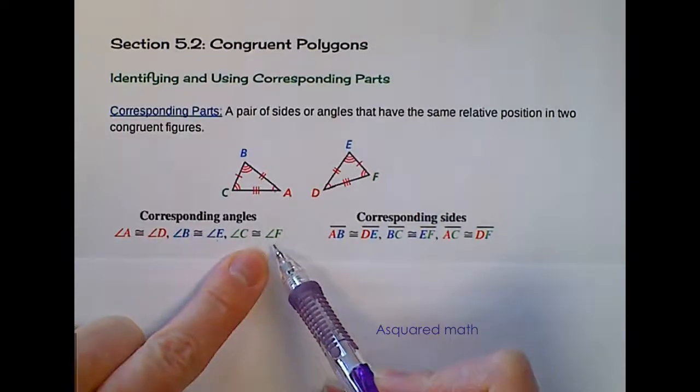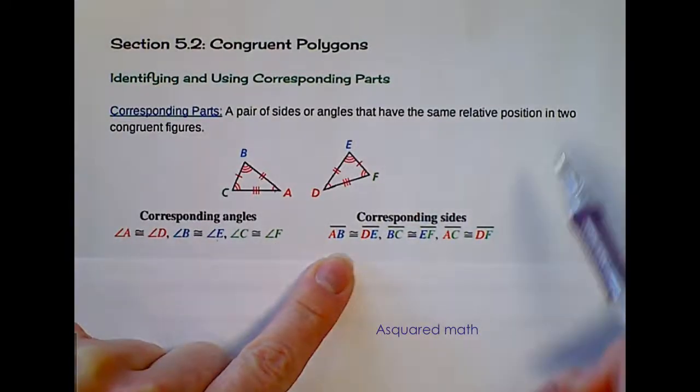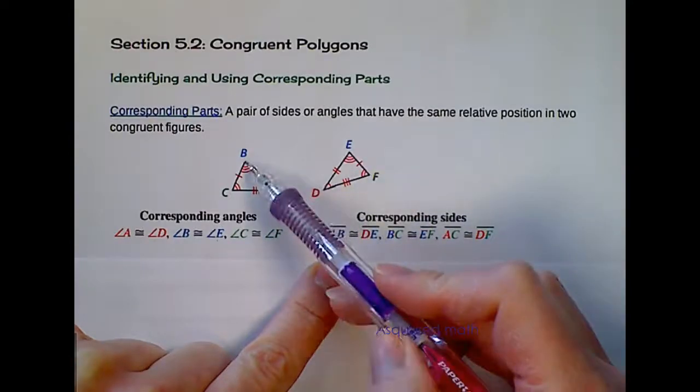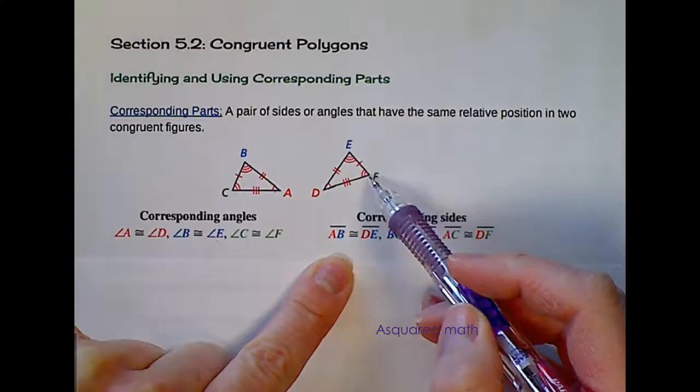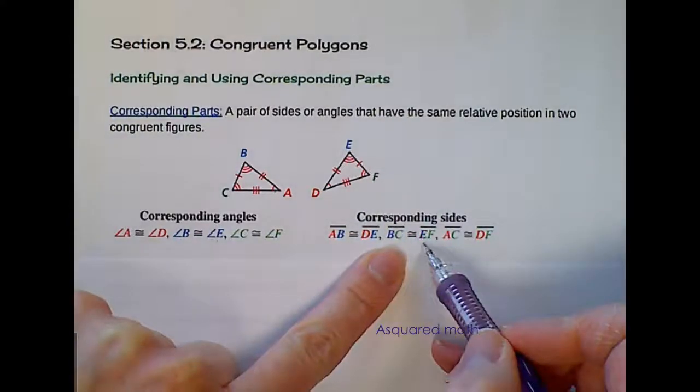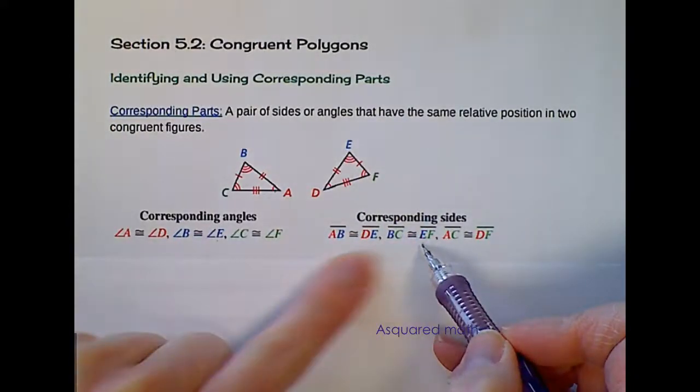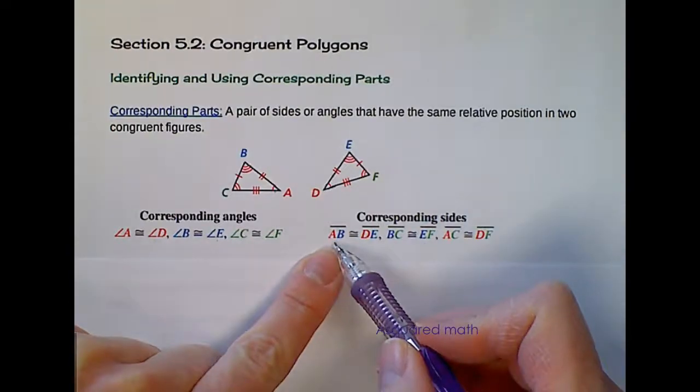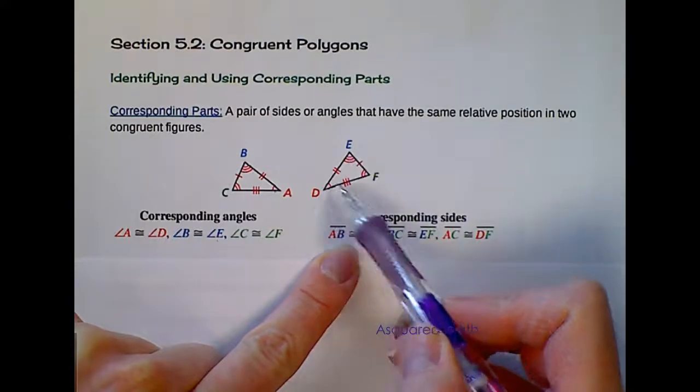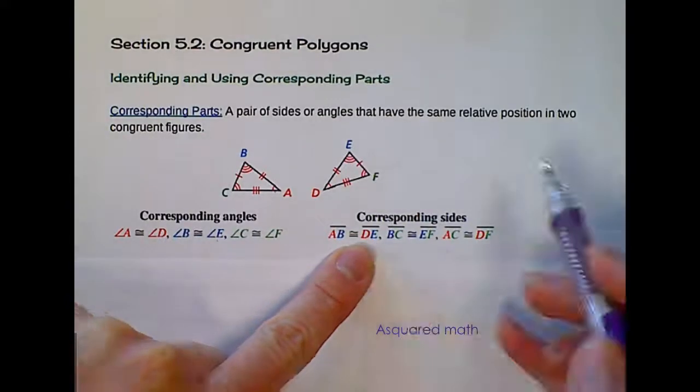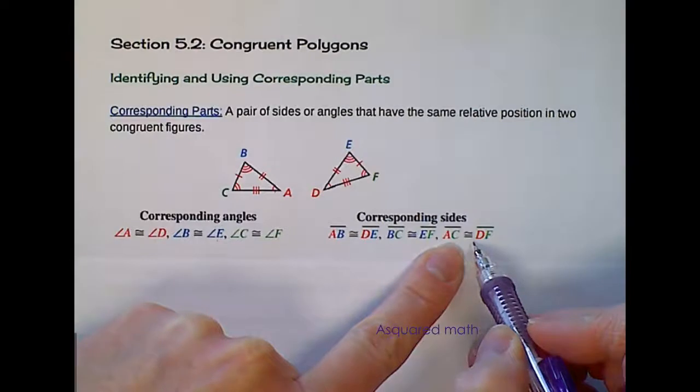We can do the same thing with sides. If we look at the markings on side length BC, it's the same as that on EF. So BC is congruent to EF, and then we can look at side length AB. AB has two markings as does side length DE. So AB is congruent to DE, and finally AC is congruent to DF.